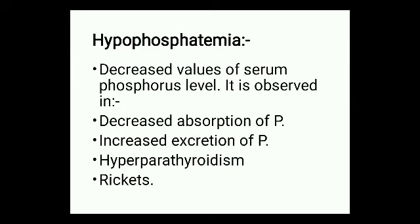The second disease state is hypophosphatemia, which means decreased phosphate level below the normal level in serum or plasma. This can result from decreased absorption of phosphorus due to malnutrition, chronic diarrhea, or vitamin D deficiency. Certain drugs such as antacids can also cause hypophosphatemia. Symptoms of severe hypophosphatemia include muscle weakness, osteomalacia, kidney damage, hypercalcemia, and loss of appetite.